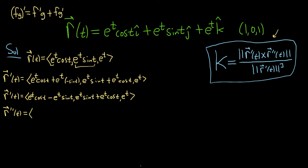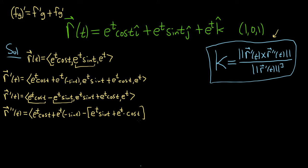Using the product rule on the first component: derivative of the first is e to the t times cosine t, plus the first e to the t times the derivative of cosine, which is negative sine t. Then minus, using the product rule on the next piece: derivative of the first e to the t times sine t, plus the first e to the t times the derivative of sine, which is cosine t.